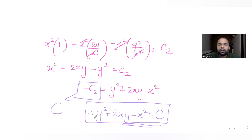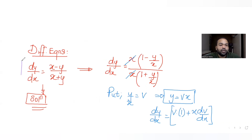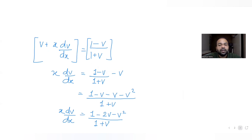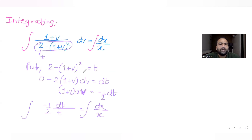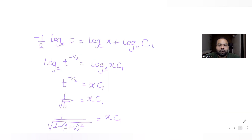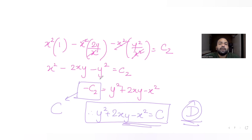This is the solution of the differential equation given to us. Matching with the options, the correct option is D. To summarize: we substituted y = vx, got the equation in terms of v and x, separated the variables, then substituted t = 2 minus (1+v)² to evaluate the integral, and resubstituted twice to get back in terms of y and x, arriving at y² plus 2xy minus x² equals c.